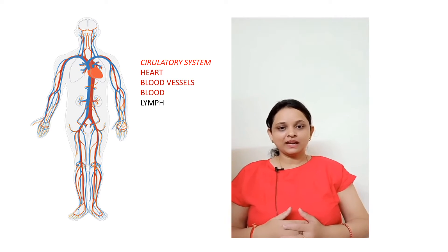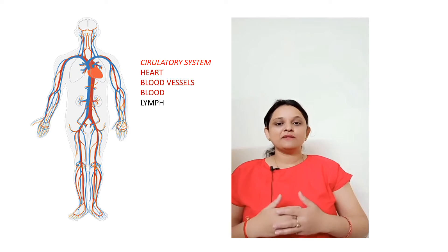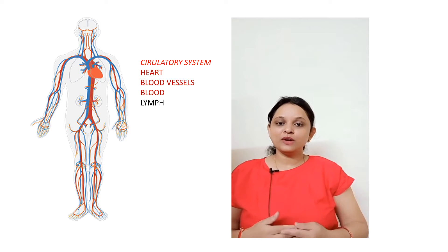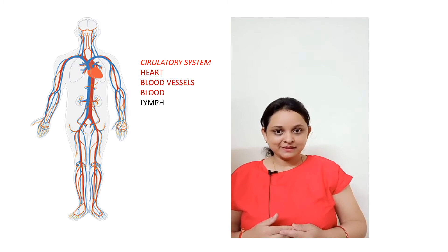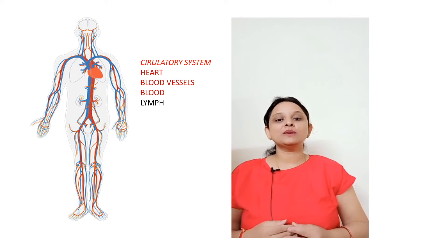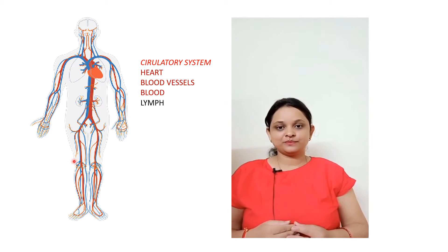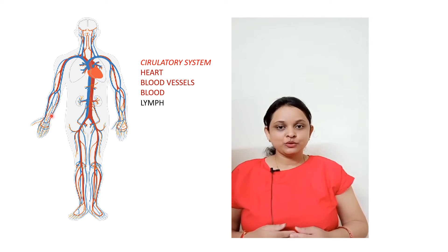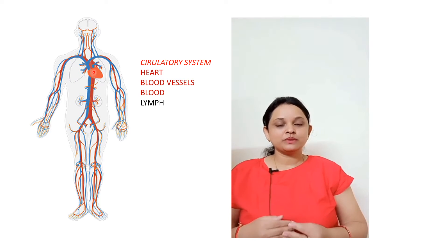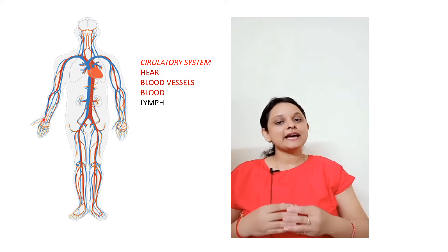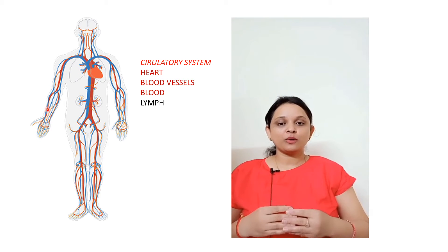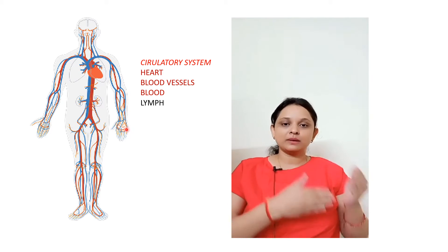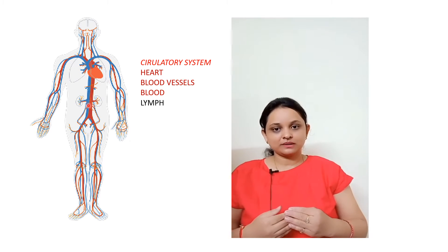Did you ever think about when whatever we eat and breathe, how every organ gets it? That is why our circulatory system allows blood to transport or pass nutrients, gases, hormones, and different other nutrients to the body organs and from the body organs.